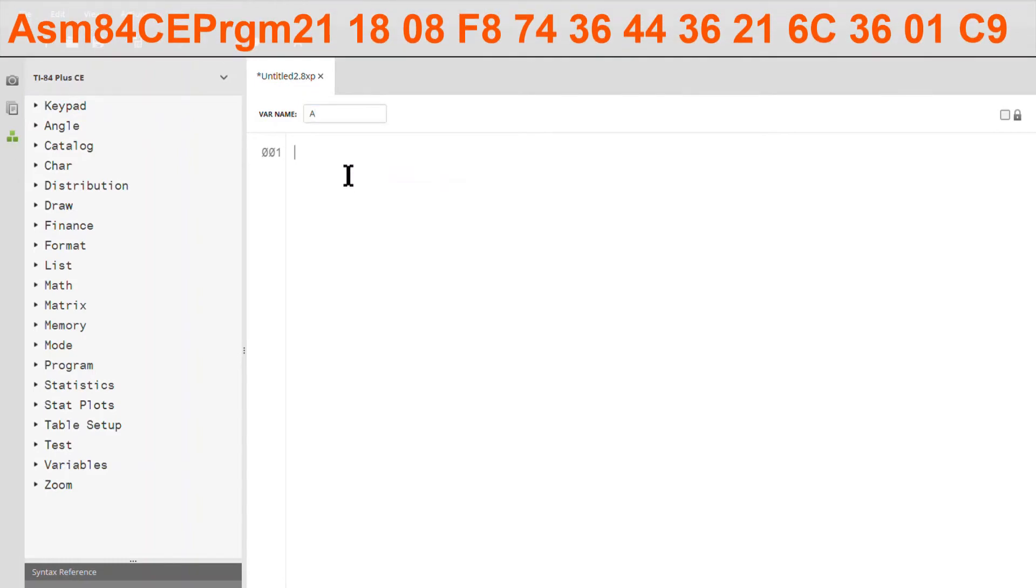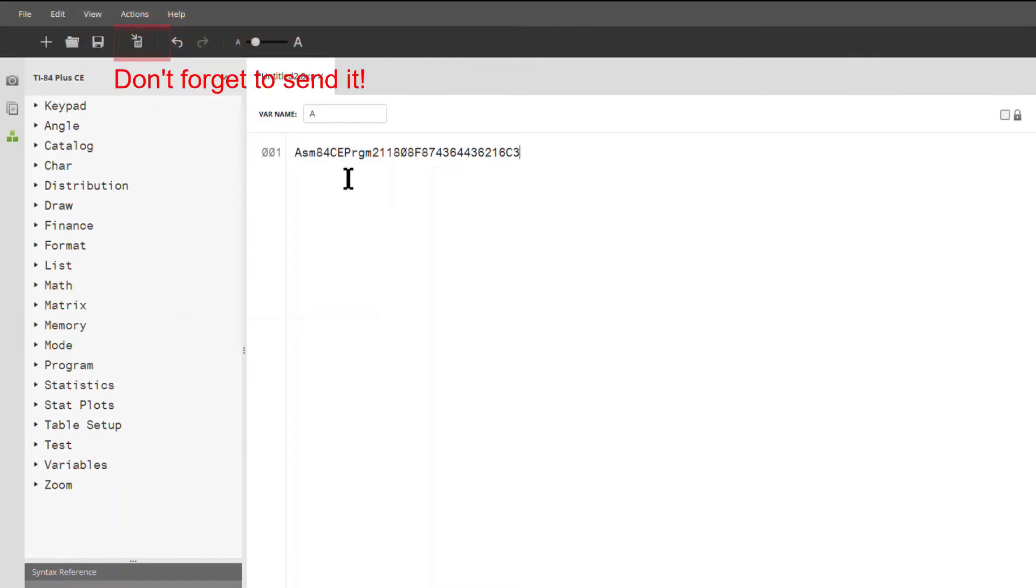Now type in exactly the code shown on the screen, only without spaces between the numbers. If you want to make sure you didn't type in anything wrong, I put the whole code in the description so you can just copy and paste it into the editor. When you're finished, it should look like this.